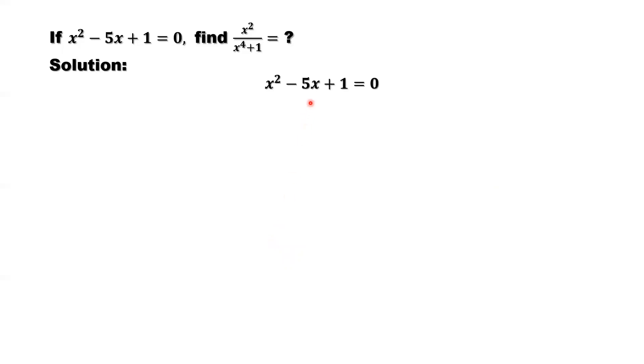x squared minus 5x plus 1 is given. We are trying to convert, simplify this into this kind of form. Now how?